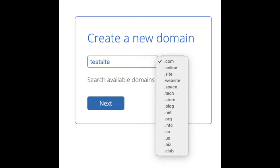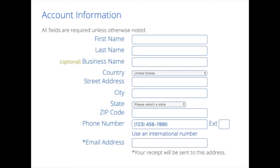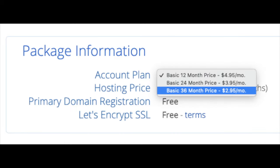I'm going to type in a domain here and click the next button. You are now brought to a create your account page where you'll input your information: first name, last name, business name (optional), your country and address information, a phone number, and the best email for you, as you'll get an email receipt of payment and a copy of your login credentials. Below that you will see package information, where you can select a term for your hosting: 12 months, 24 months, or 36 months. You'll save money the longer you purchase your hosting for. I'm going to select the 12-month package.